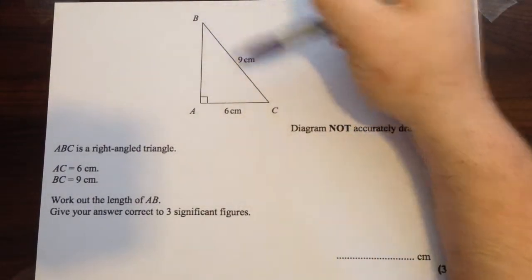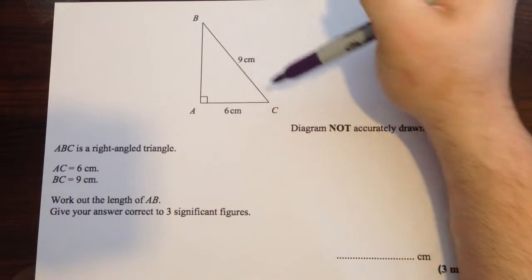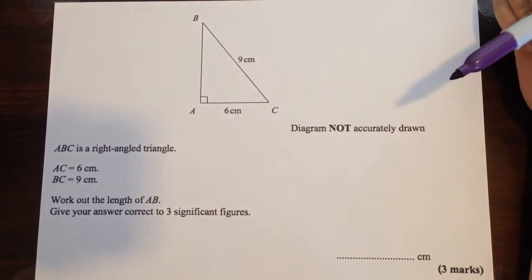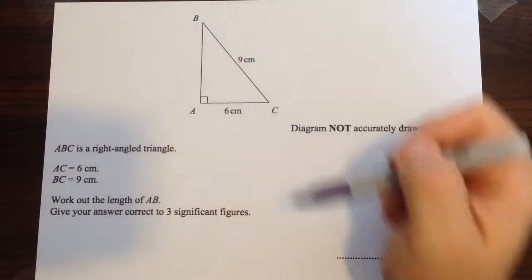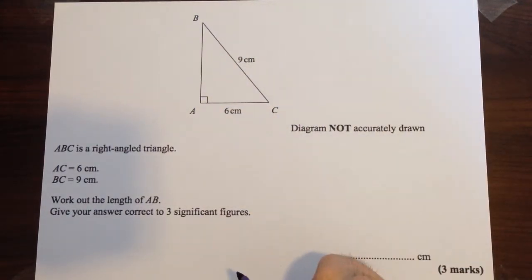Here we have a right angle triangle ABC where BC is 9 cm, AC is 6 cm, and we're being asked to work out the length of AB, which is there, and give our answer correct to three significant figures.